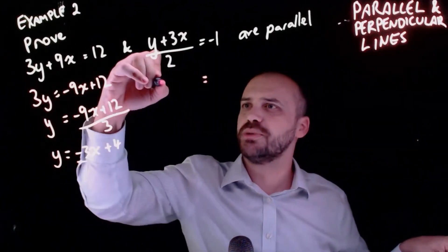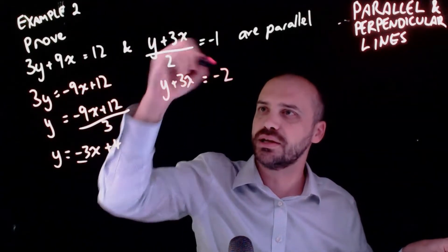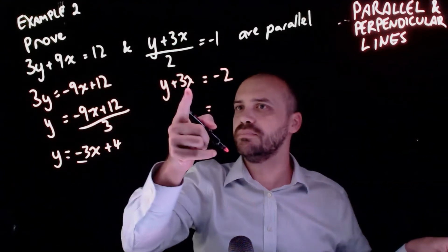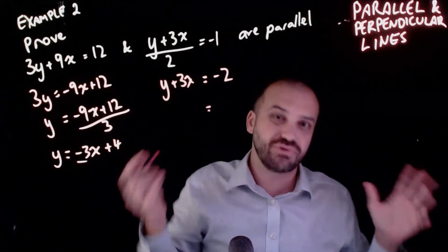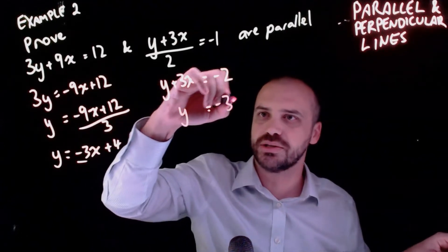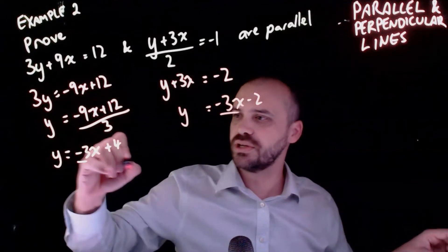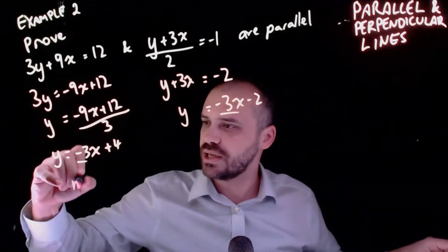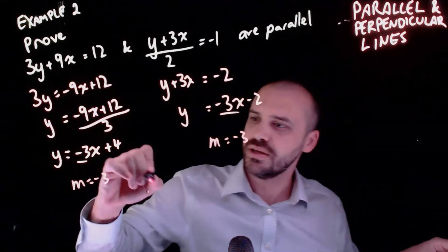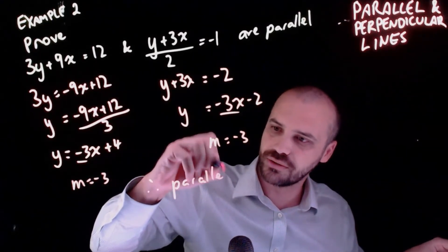For the second equation, multiply both sides by 2: y plus 3x equals negative 2. Subtract 3x from both sides: y equals negative 3x minus 2. I can see a gradient of negative 3. So m equals negative 3 for the first equation and m equals negative 3 for the second - therefore they are both parallel.